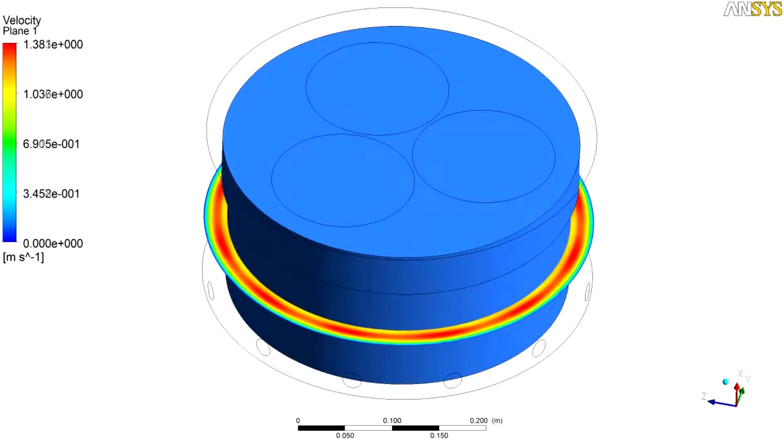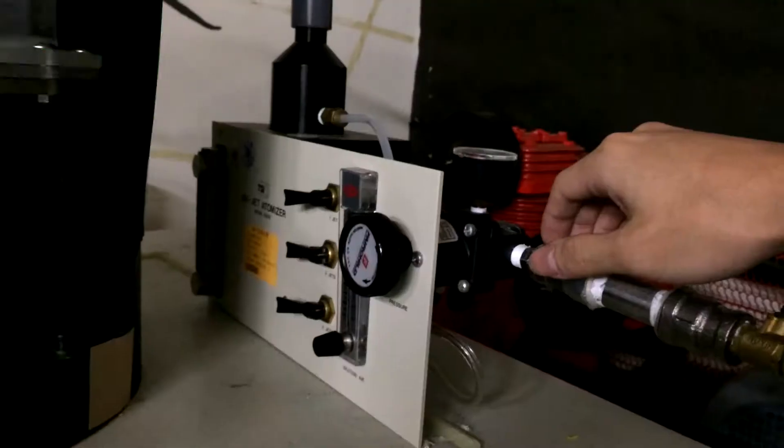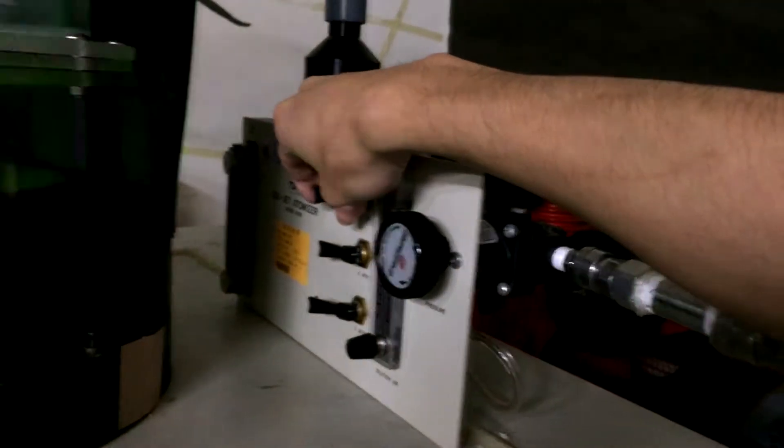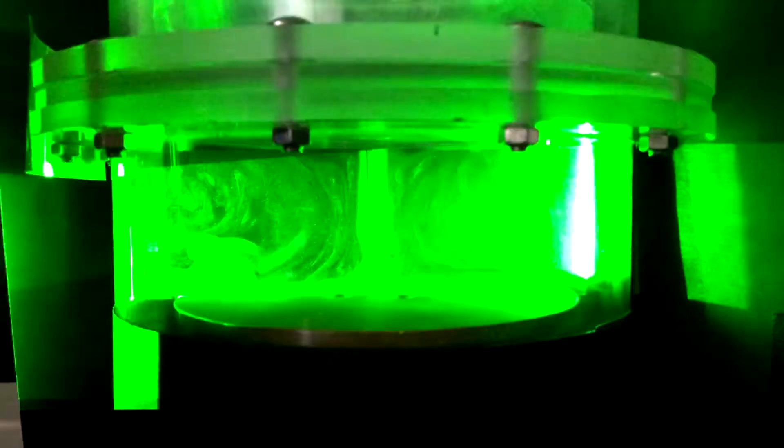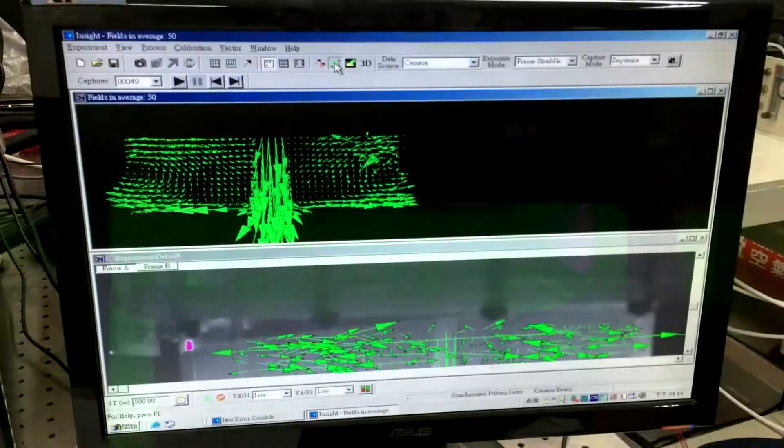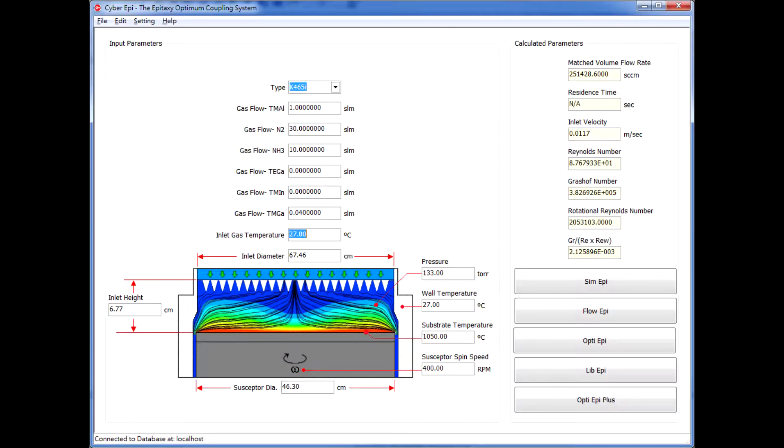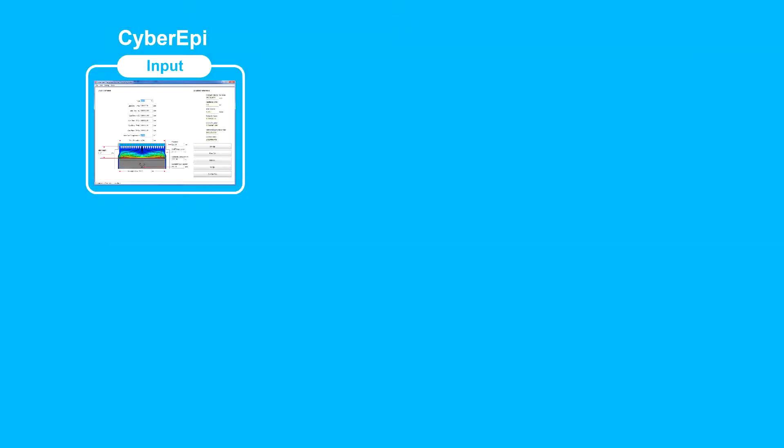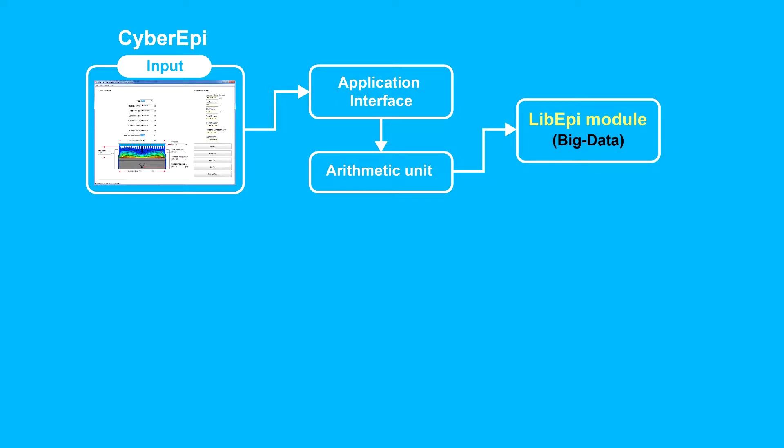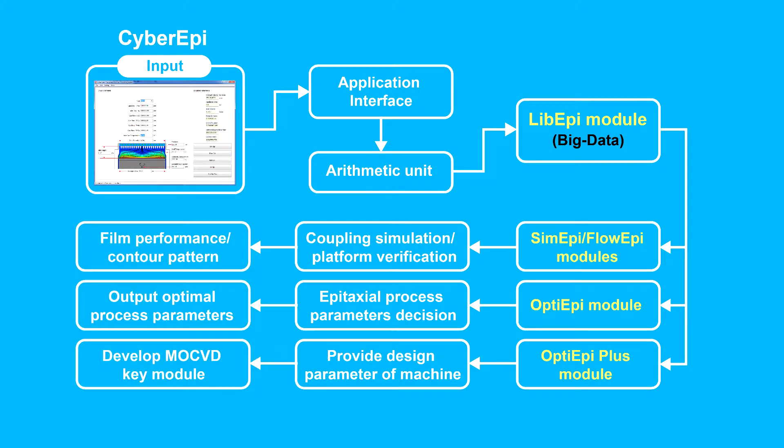Through multi-physical and chemical coupling simulation analysis, as well as heat flow field visualization technology, users can observe the heat flow field of the Epitaxi Growth with laser dynamic photography. Combined with process parameter experiments, the program will produce simulation analysis for process optimization and import it to a big database.